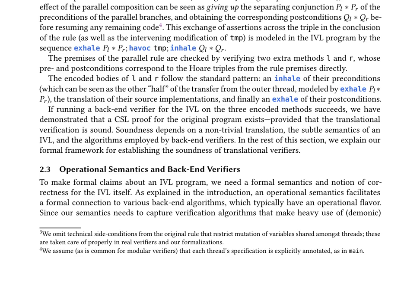The paper also explains the encoding of a source-level parallel composition using the CSL proof rule. This rule allows the overall effect of the parallel composition to be seen as giving up the separating conjunction of the preconditions of the parallel branches and obtaining the corresponding post-conditions before resuming any remaining code. The premises of the parallel rule are checked by verifying two extra methods lander, whose pre- and post-conditions correspond to the Hoare triples from the rule premises directly. The encoded bodies of lander follow the standard pattern: an inhale of their preconditions, the translation of their source implementations, and finally an exhale of their post-conditions.